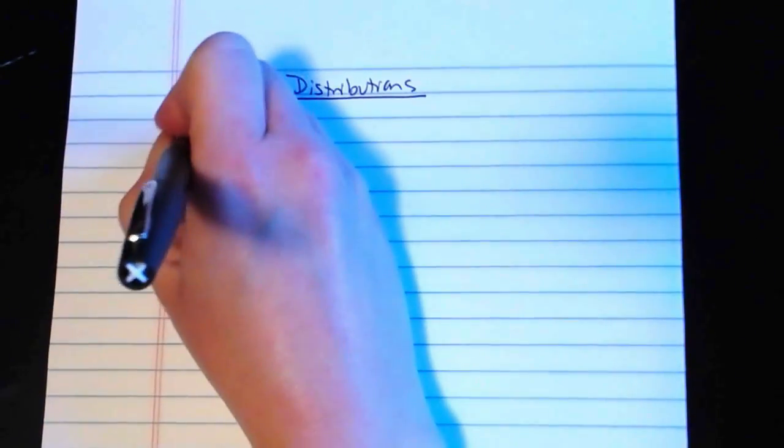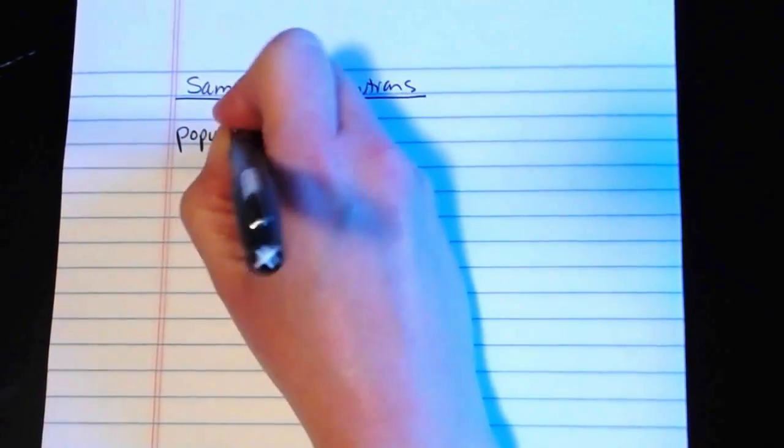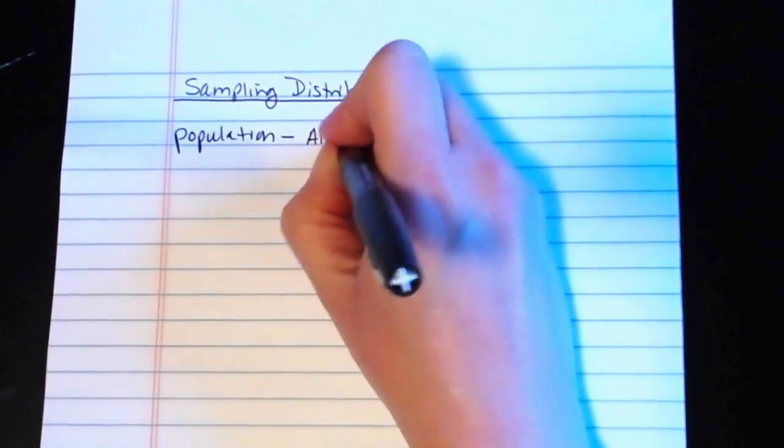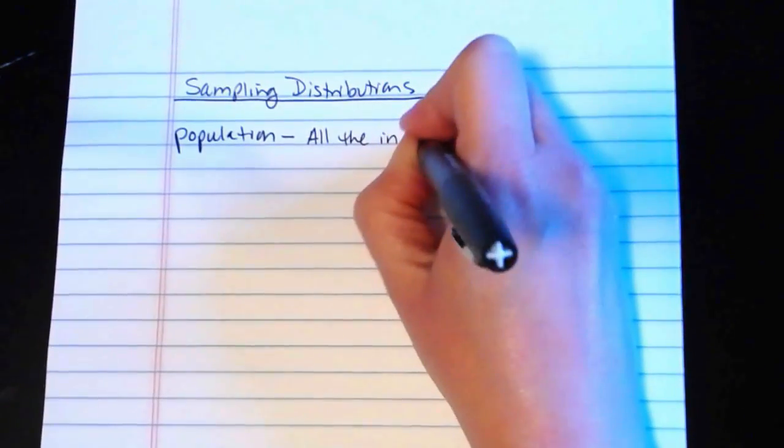The first review concept is the notion of a population. And remember that a population consists of all the individuals of interest.